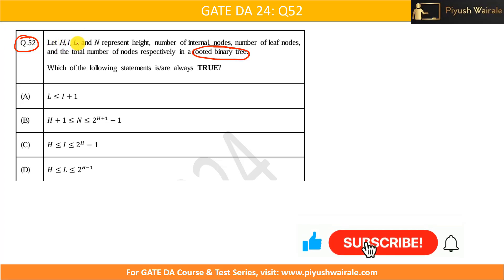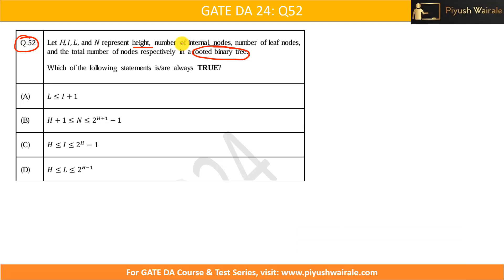Let h, i, l and n represent height, number of internal nodes, number of leaf nodes and total number of nodes respectively in a rooted binary tree.